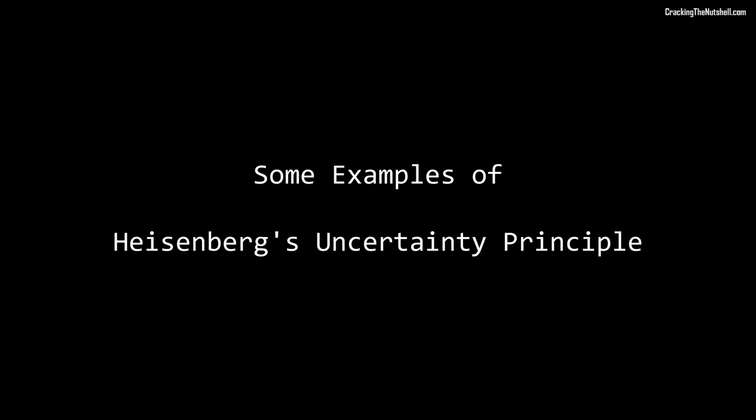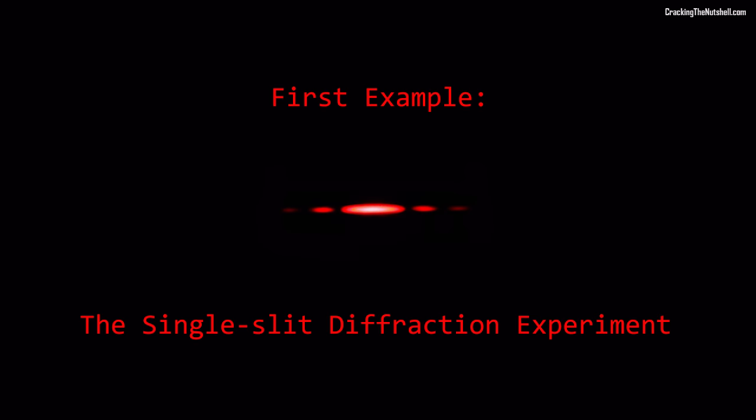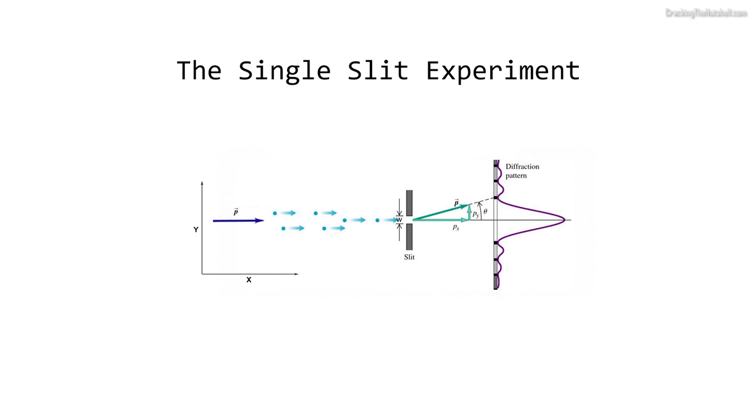Now, let's take a look at the uncertainty principle through a couple of examples, starting with the single-slit laser experiment I showed you at the start of the video. This is a diagram of the single-slit diffraction experiment, which I demonstrated earlier on.